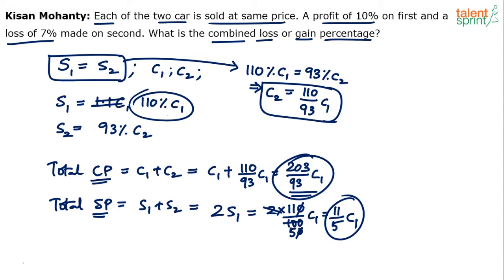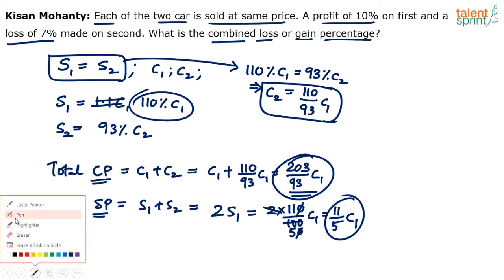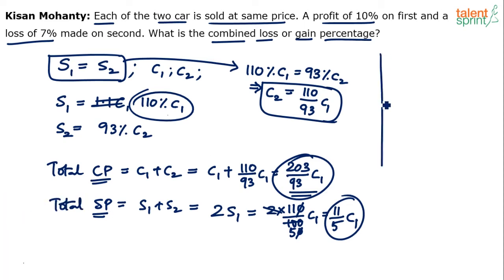One important point: we cannot assume that the cost prices are the same. If you take the cost price to be the same, you will get a different answer. The question has not mentioned anywhere that the cost price is the same — all it says is each of the two cars is sold at the same price. The selling price is the same, not the cost price. That is why we are taking C1 and C2. Be careful.